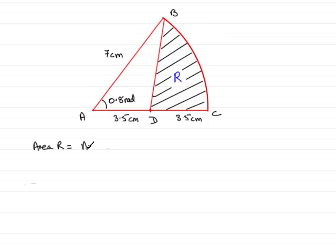So I'll just write that in, that the area R will equal the area of the sector minus the area of the triangle ABD.